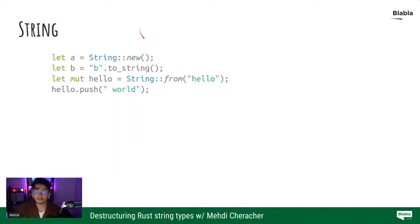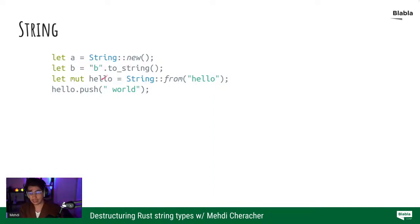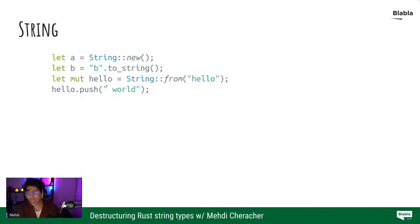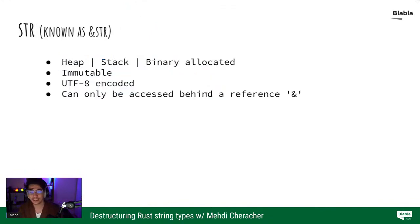We can create empty strings, we can convert string literals into an owned version of a string. As I said, they are mutable, so you can have a mutable reference. In that case you create an owned mutable reference and you can push stuff into it and it would change the actual value. So that is your most straightforward string type.